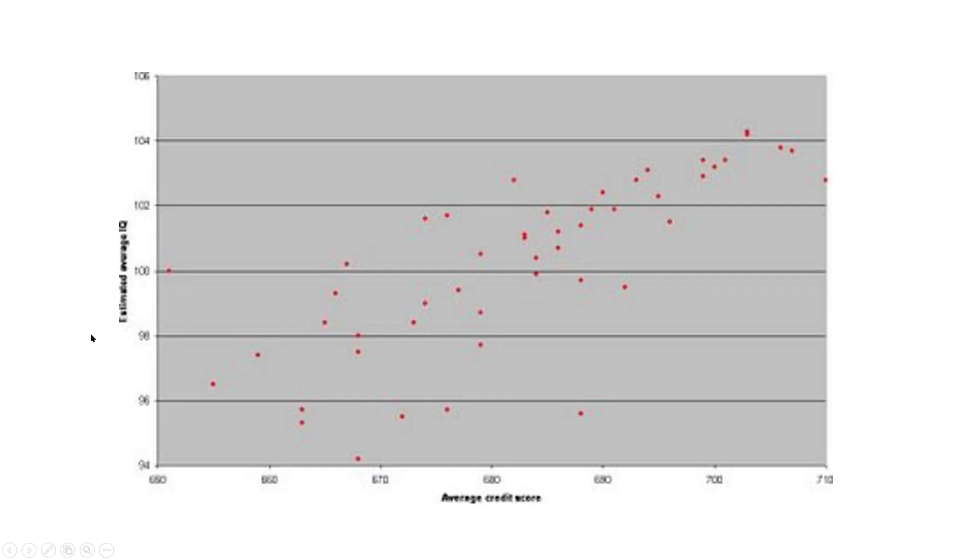This is the estimated average IQ and the average credit score. So your FICO credit score increases with IQ. If you're over 100, you can have a very good FICO score as it increases and increases and increases.